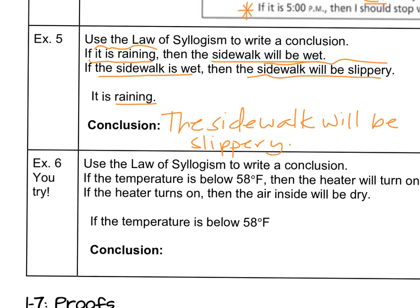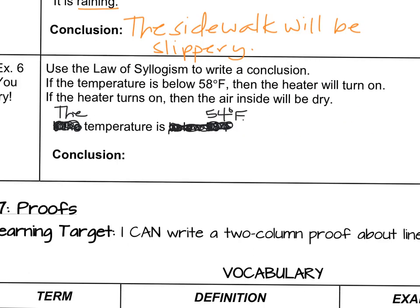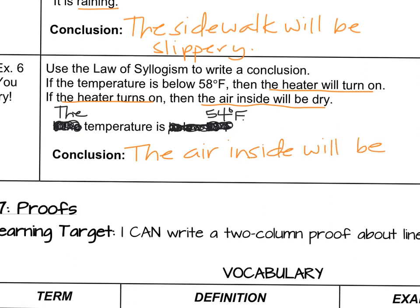Now I'm going to make a couple of changes on this statement. Use the law of syllogism to write a conclusion. If the temperature is below 58 degrees Fahrenheit, then the heater will turn on. If the heater turns on, then the air inside will be dry. The temperature is 54 degrees Fahrenheit. What can we conclude? When we know the heater will turn on, the conclusion is simply: the air inside will be dry. This is lesson 1.6 — using either the law of detachment or the law of syllogism to come up with conclusions.